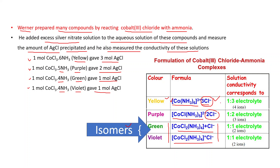If conductivity is measured, the yellow colored compound corresponds to a 1:3 electrolyte, meaning it gives 1 cation and 3 anions — a total of 4 ions. The purple color compound corresponds to a 1:2 electrolyte, meaning a total of 3 ions. For the green and violet color compounds, conductivity corresponds to a 1:1 electrolyte — 1 cation and 1 anion — a total of 2 ions.